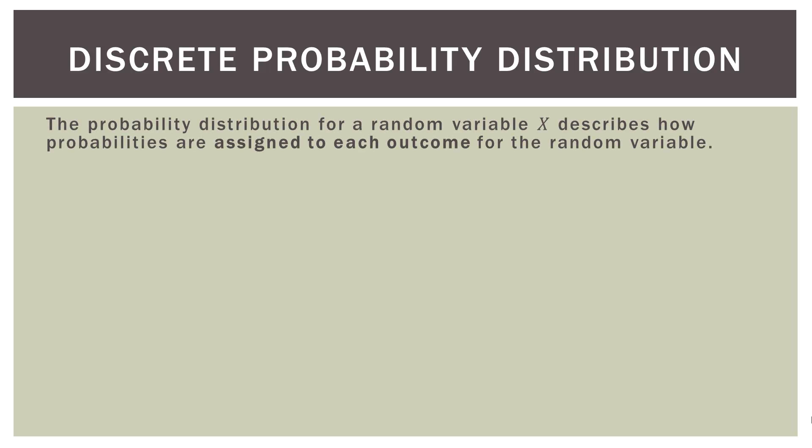So what is this discrete probability distribution? The probability distribution for a random variable — which is almost always denoted as capital X — describes how probabilities are assigned to each outcome for the random variable. What we're doing is assigning a probability to each outcome of the random variable.